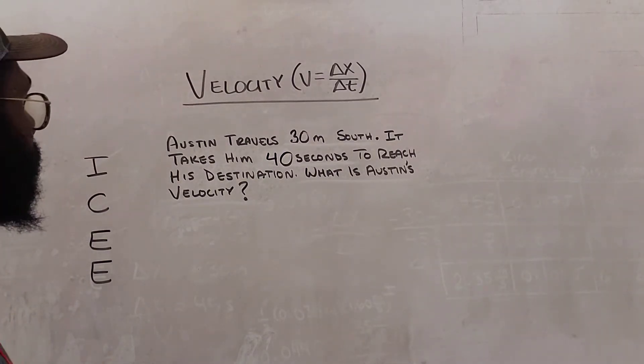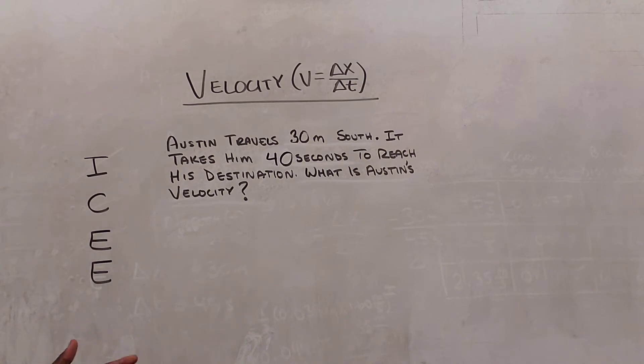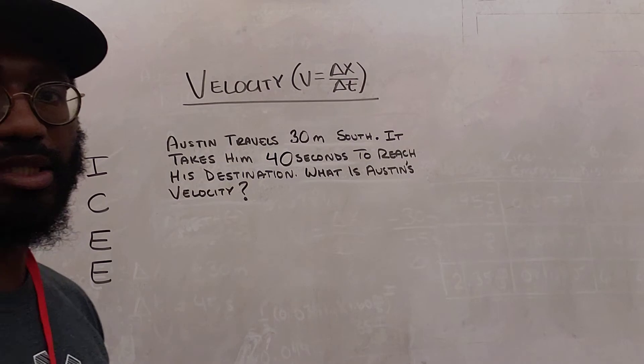So the problem reads: Austin travels 30 meters south. It takes him 40 seconds to reach his destination. What is Austin's velocity?